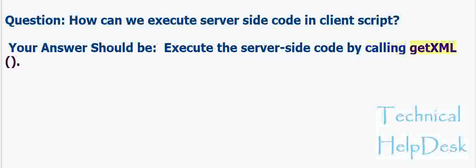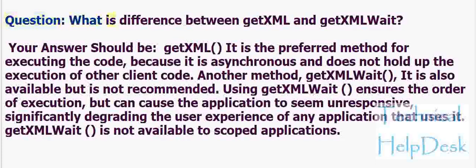Question: What is the difference between getXML and getScopeAwait? Answer: getXML is the preferred method for executing the code because it is asynchronous and does not hold up the execution of other client code. getScopeAwait is also available but is not recommended. Using getScopeAwait ensures the order of execution but can cause the application to seem unresponsive, significantly degrading the user experience. getScopeAwait is not available to scoped applications.